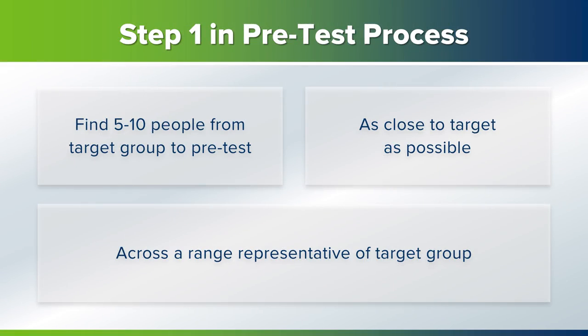Let's walk through the pre-testing of your survey. Step one in the process is to pre-test your survey. To do this, you would find five to ten people from your target group for testing. Once you've finished designing your survey questionnaire, find five to ten people from your target group to pre-test. If you can't get people from your exact target group, then find people who are as close as possible.